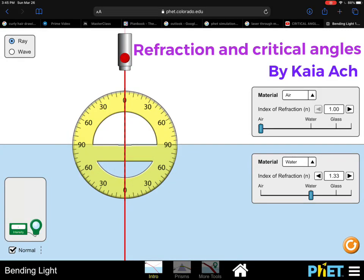Refraction and critical angles. What is refraction? Refraction is when light bends as it passes between different transparent substances.